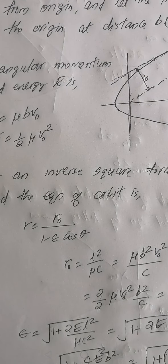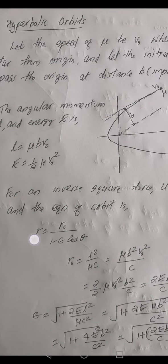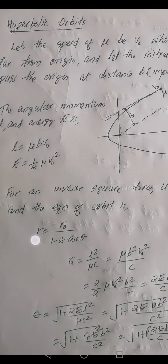Let us choose an example such as an inverse square law of force. In the case of an inverse square law force, U(r) is given by minus c over r. Then, the equation of orbit becomes r equals r0 over (1 minus epsilon*cos(theta)), where r0 is given by L²/(mu*c), as we learned earlier.